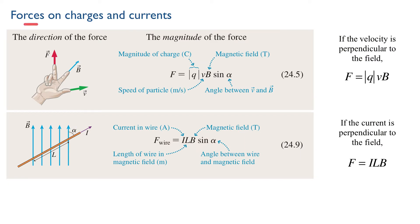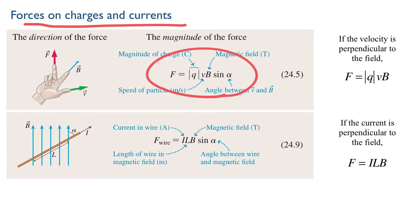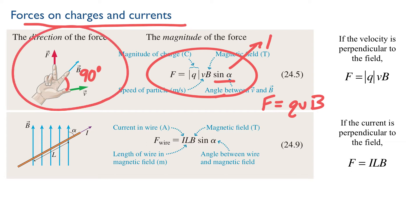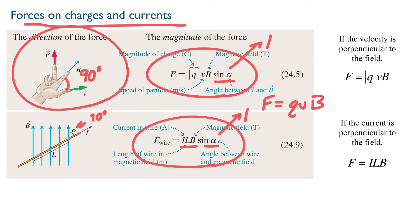Next, we look at the forces that magnetic fields exert on charges and currents. For a single moving charge, the force is Q times V times B times the sine of alpha, where alpha is the angle between the magnetic field and the velocity. For our purposes, that's generally going to be 90 degrees, so sine of alpha equals 1, and the force is just Q times V times B. The direction is given by the right-hand rule for forces. For currents, the force on a wire carrying current I is I times L times B - again with sine of alpha equal to 1.